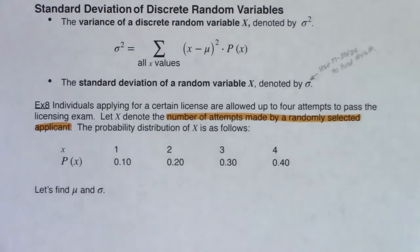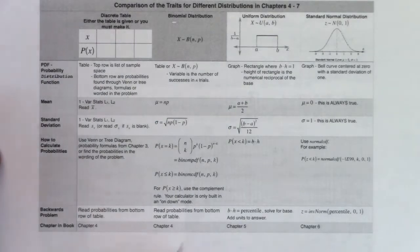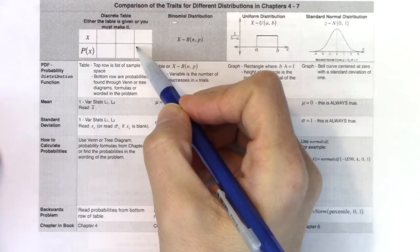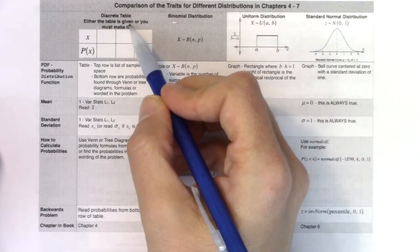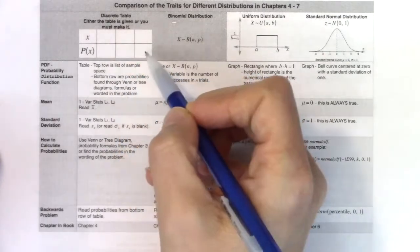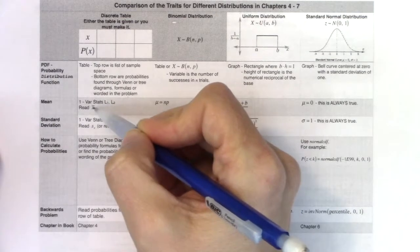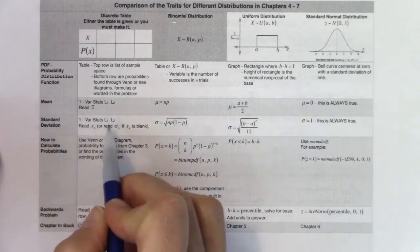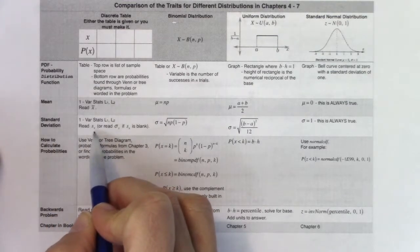So I want us to consult our trait table. I want us to start getting into these habits, right? This is a discrete variable, number of attempts taken to pass a licensing exam. The table was just flat out given to me. So I don't even have to make this thing. I have it. If I want the mean, I'm going to do one-var stats L1, L2, and I'm going to read x bar. And it's similar for the standard deviation. I'm going to read one-var stats L1, L2. Typically, we read sx.